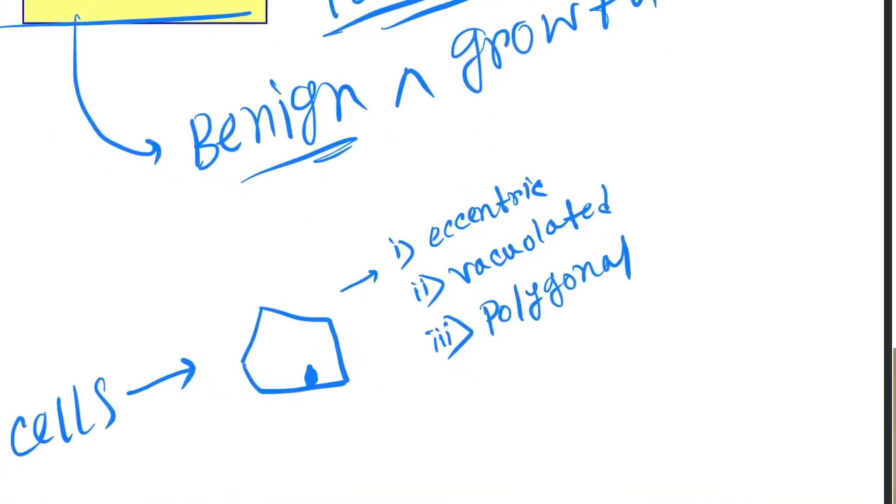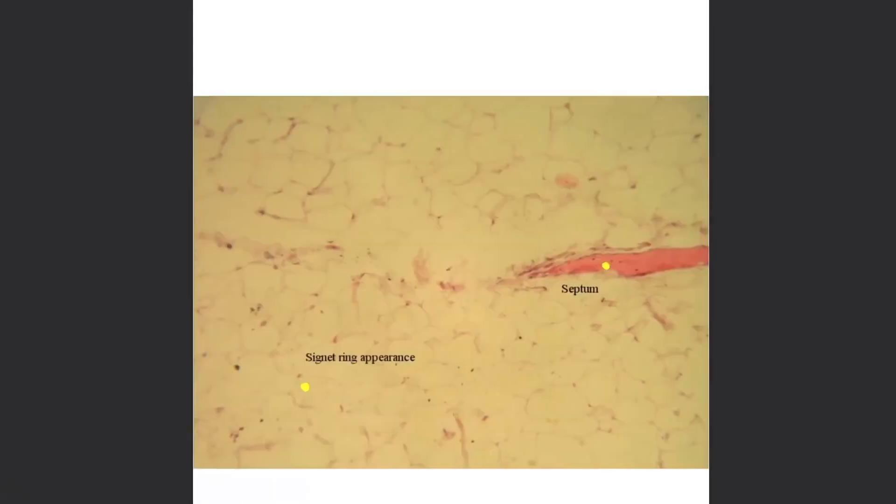This appearance is called signet ring appearance. So these three features are the main features of the lipoma. Thank you guys for watching this video.